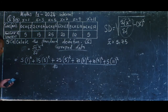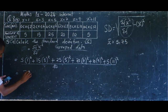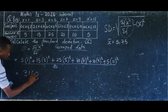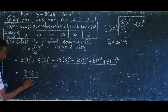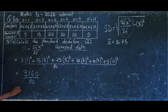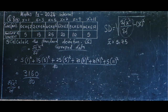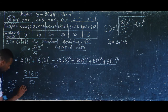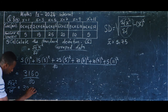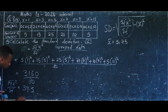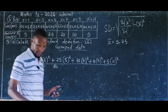When you are done punching everything on the calculator, you are going to find that your answer is 3,160. Now divide this value by 80. So this gives us summation fx² over summation f equals 39.5 as our answer.